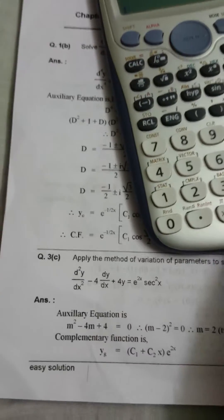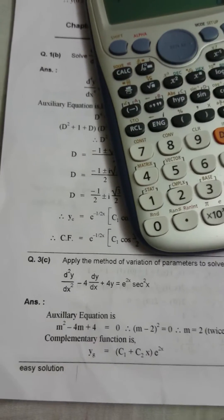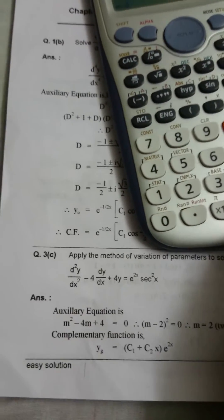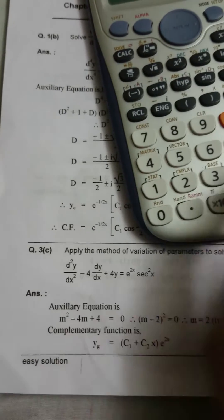So enter 1. Then the coefficient of m is -4, so enter -4, and then the constant term is +4.